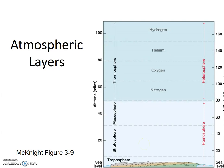Our Earth's atmosphere can be divided up into different layers, which we see here. Almost every topic that we discuss in our class will be related to the lowest layer, the troposphere. Later in the class, we'll talk about air pollution and climate change. Both of these topics deal with the troposphere. The only time we will discuss the stratosphere is this week, when we discuss stratospheric ozone depletion.